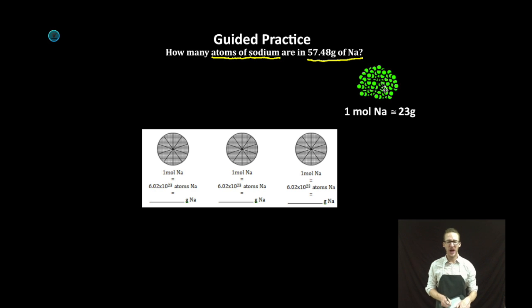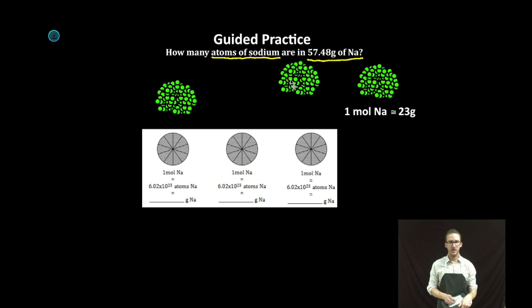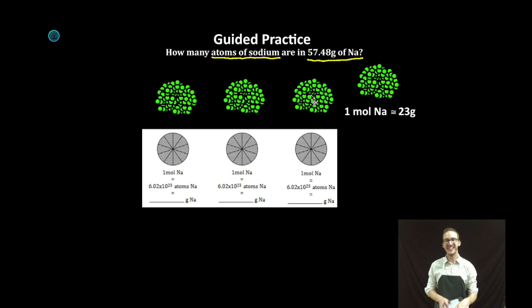Again to start I'm just going to estimate. If one mole is about 23 grams then two moles is going to be about 46 grams. If I did three moles that's going to be 69 grams and a little too much.